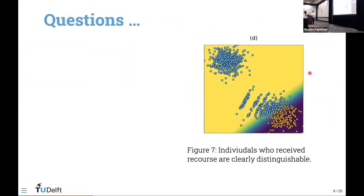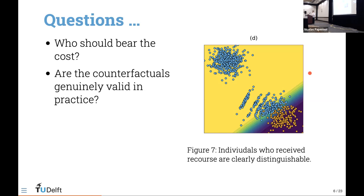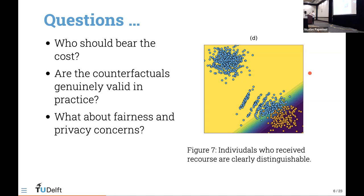Several questions arise here. First, who should bear this cost we have generated? Second, are the counterfactuals we generated actually valid in practice? You could imagine the bank, upon realizing its average default risk has increased, refusing to provide recourse to future would-be borrowers — transferring that cost to future borrowers who no longer receive recourse. There are also questions about security, fairness, and privacy: we can distinguish these individuals from others in the domain, which gives rise to further discrimination.